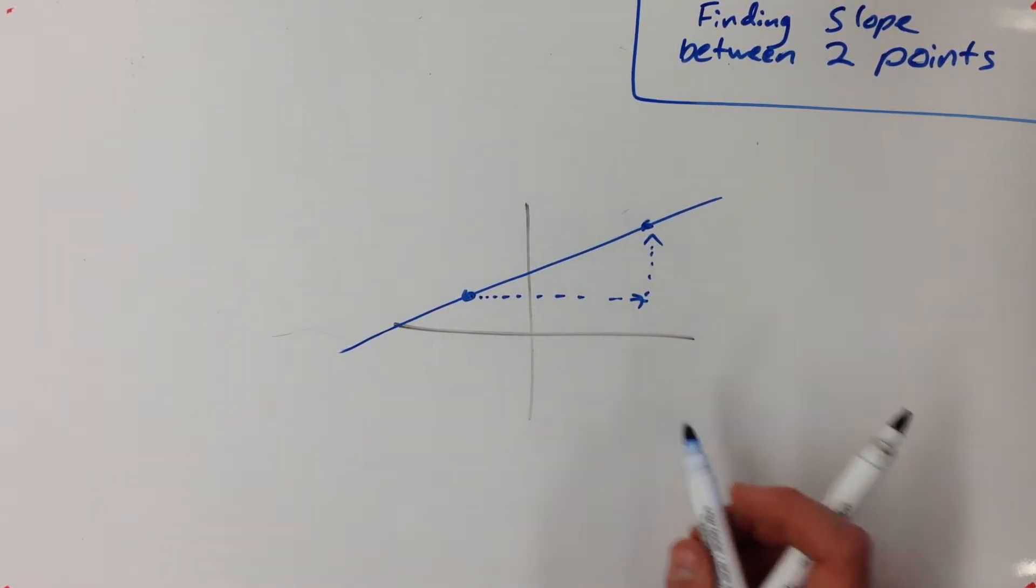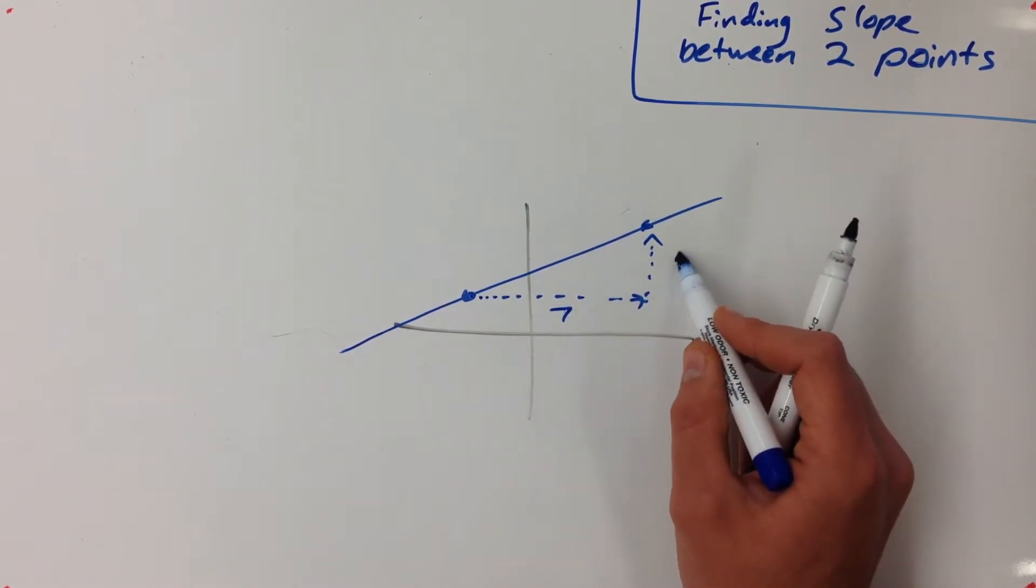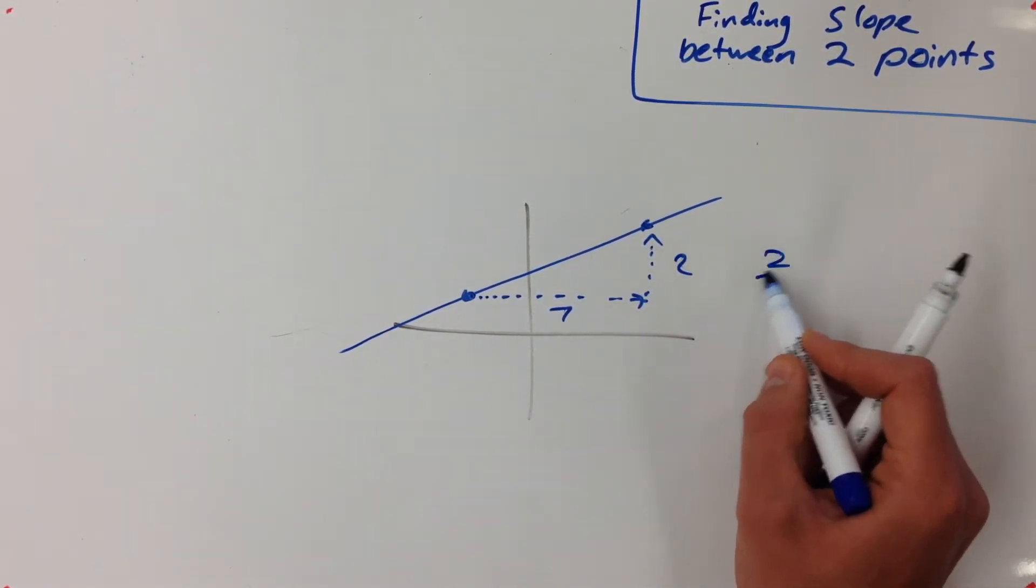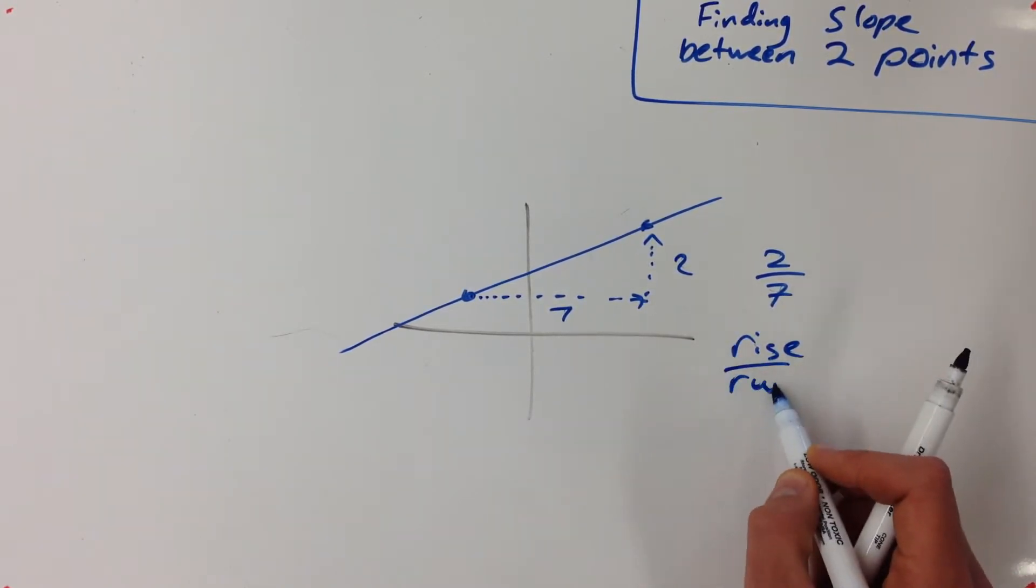This works really well if we're already given a graph because we can say I'm just going to put in some fake numbers here. Let's say that's over seven and this is up two. So the slope of this line is two sevenths because we think about slope as rise over run. It's the speed that this line is increasing at.